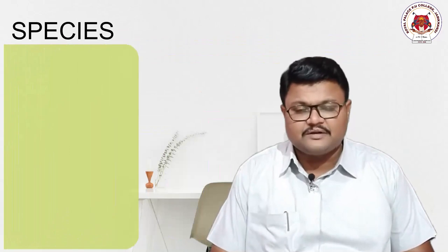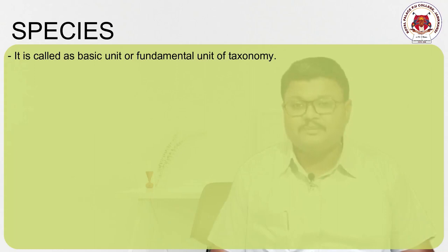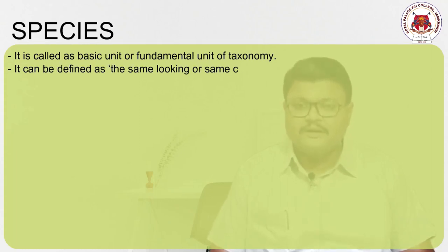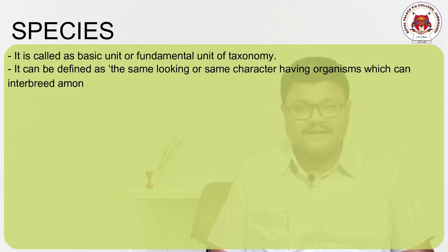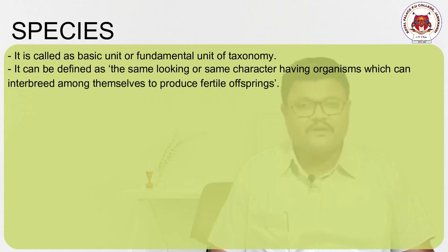Let us start with the first category in the hierarchy: Species. In the taxonomical hierarchy, species is the bottommost or most basic unit. Species is called the basic unit of taxonomy. It can be defined as closely related organisms sharing similar morphological and anatomical characteristics, which can interbreed among themselves to produce fertile offspring.